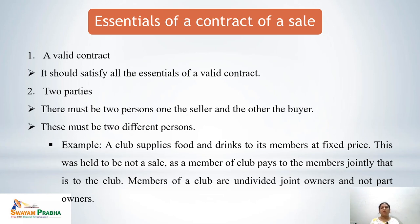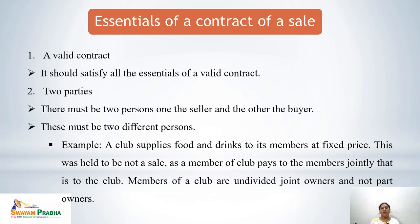What are the essentials of a contract of sale? The first essential is a valid contract. As we know, there are provisions under Section 10 of the Indian Contract Act 1872 regarding the validity of a contract. All those valid essentials must be present even in a contract of sale. If any of them is absent, it would render the contract void or voidable.